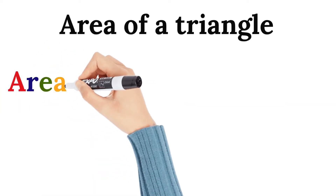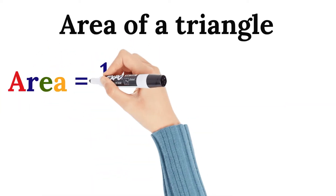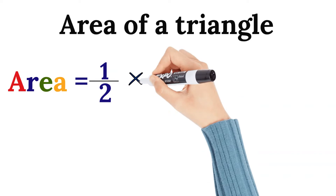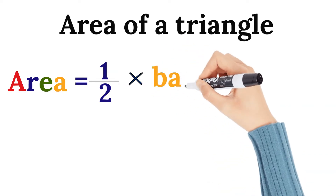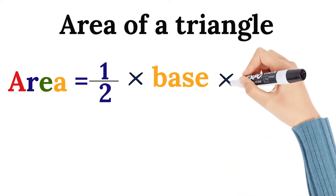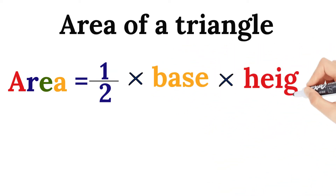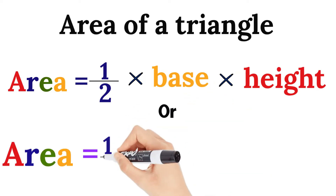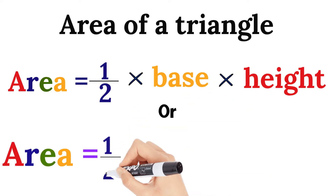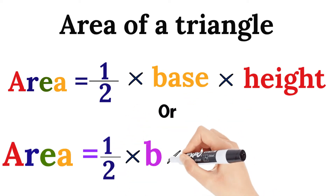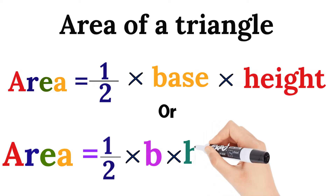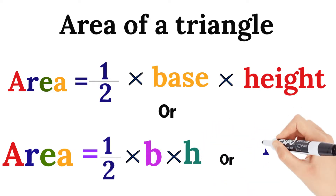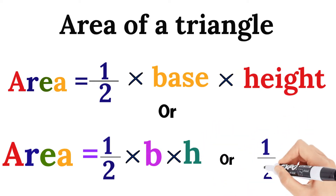Area of a triangle. The formula is one half times the base times the height — half base times height. So one over two times b times h, or one over two bh.